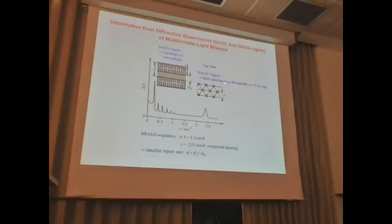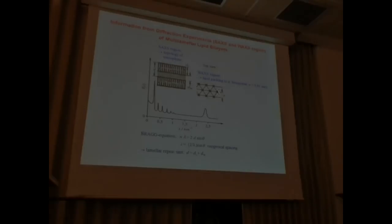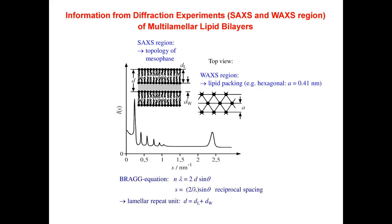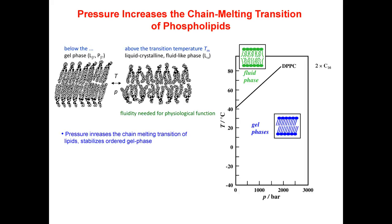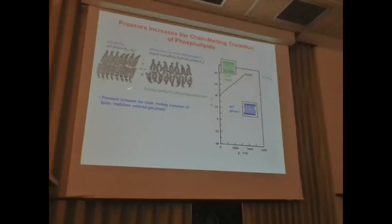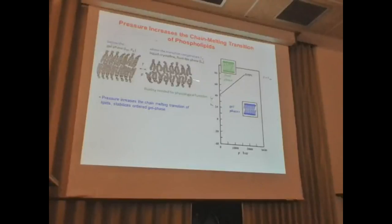How do you measure this? By small-angle and wide-angle X-ray or neutron scattering. Lipid bilayers in water form one-dimensional stacks, like 1D crystals, giving lamellar Bragg reflections in the small-angle scattering region. From the Bragg equation, you determine the repeat distance — the bilayer thickness plus the water layer around the head group area. In the wide-angle scattering region you see the lateral packing of the lipids. Measuring both as a function of temperature gives information about phase behavior, and doing the same as a function of pressure yields a temperature-pressure phase diagram.